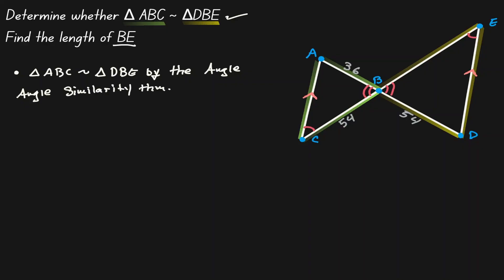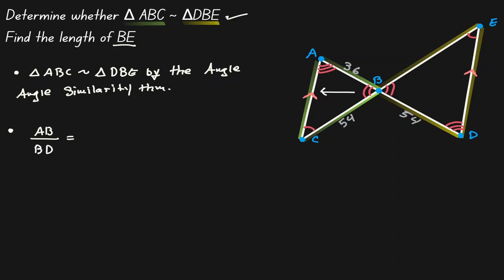Now let's try to find the length of BE. Notice that we can also say that angle A is congruent to angle D. Since these two triangles are similar, all sides must be proportional to each other. The side opposite to the angle with one arc must be proportional to the side opposite the angle with one mark on the right-hand side, so AB is proportional to BD. The side opposite to the angle with two arcs must be proportional to the corresponding side, so AC is proportional to ED.